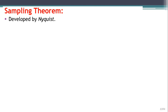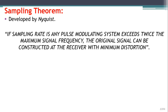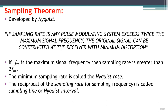The sampling theorem was developed by Nyquist. It states that if the sampling rate in any pulse modulating system exceeds twice the maximum signal frequency, the original signal can be reconstructed at the receiver with minimum distortion. If FM is the maximum signal frequency, then the sampling rate must be greater than 2FM. The minimum sampling rate is called the Nyquist rate, and its reciprocal is called the Nyquist interval.